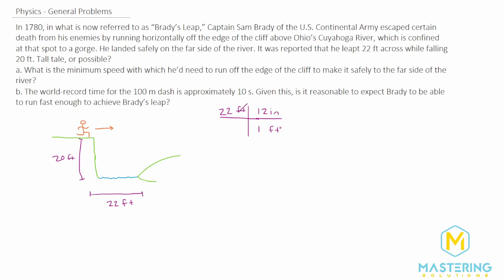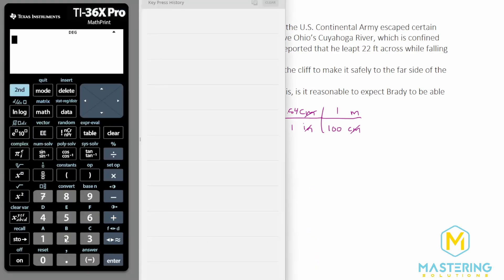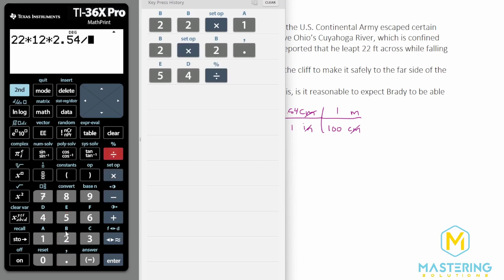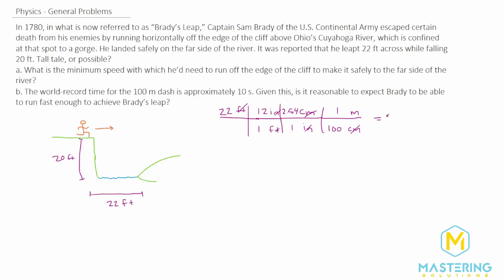We'll use dimensional analysis. We want feet on the bottom, so let's put it into inches first — in one foot there are 12 inches, so the feet cancel. Now we want to convert to metric: inches on the bottom to cancel, centimeters on top, and in one inch there are 2.54 centimeters. So 22 multiplied by 12, multiplied by 2.54, divided by 100 gives us 6.7 meters.